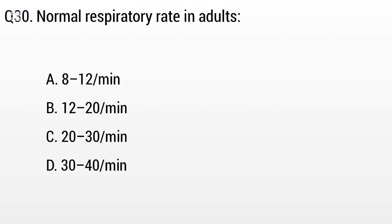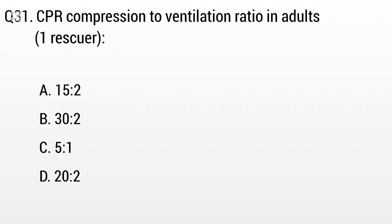Question 30: Normal respiratory rate in an adult? Options: A: 8 to 12 per minute, B: 12 to 20 per minute, C: 20 to 30. The right answer is option B: 12 to 20 per minute.